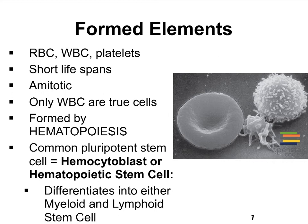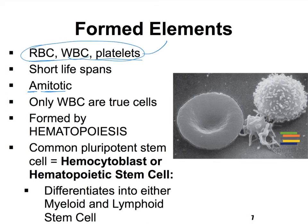The formed elements include red blood cells (erythrocytes), white blood cells (leukocytes), and platelets (thrombocytes). All formed elements have a relatively short lifespan — from minutes to hours to a few months — and none can divide once formed, making them amitotic. Only white blood cells contain a nucleus with organelles and are therefore true cells. Red blood cells and platelets lack a nucleus, which is why all three are called formed elements rather than cells.